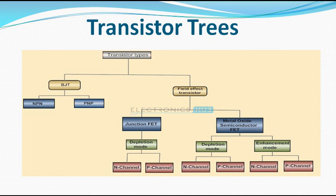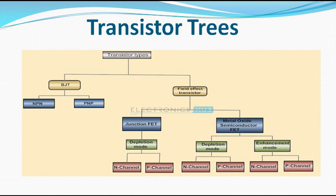NPN is negative-positive-negative while PNP is positive-negative-positive. In the FET category, it is also classified into two: Junction FET and Metal Oxide Semiconductor FET. For JFET we will be discussing the depletion mode which has N-channel and P-channel. For MOSFET it has depletion mode with N-channel and P-channel, and also enhancement mode with N-channel and P-channel. This is the introduction aspect of it, and this is what we will be discussing in specific detail.